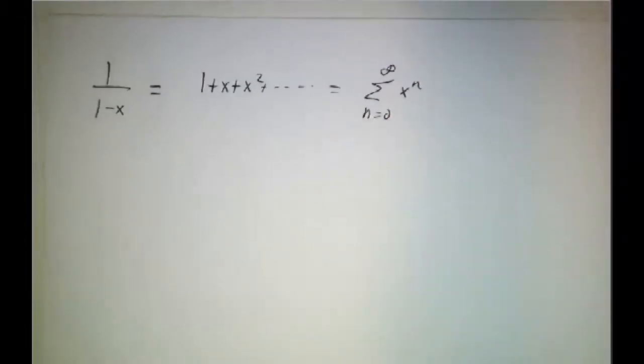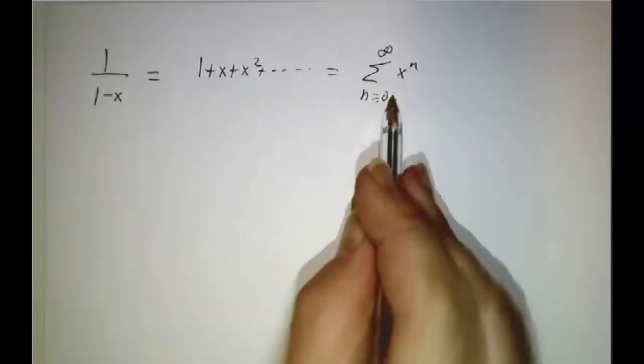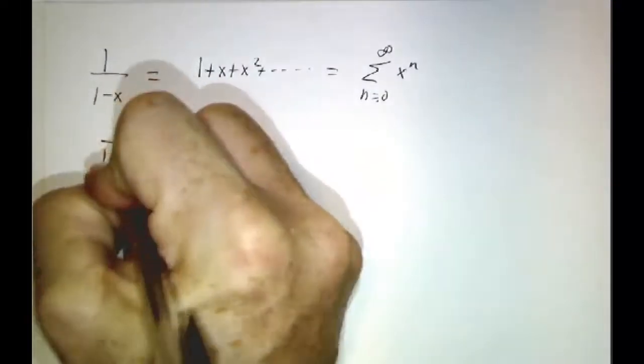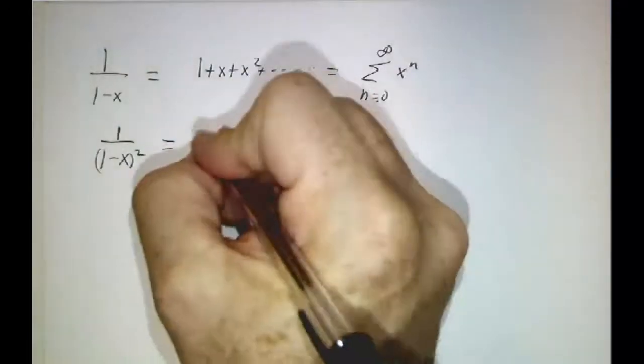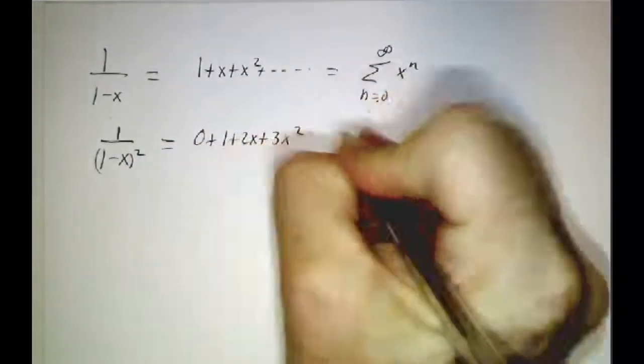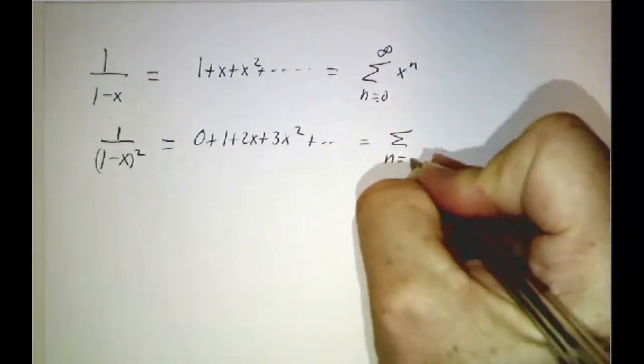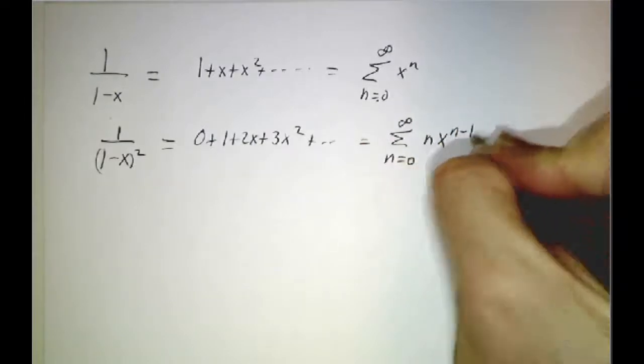So now since this is true for every value of x, you can take the derivative of both sides. If you take the derivative of both sides, you get 1 over 1 minus x squared is equal to 0 plus 1 plus 2x plus 3x squared. In other words, the sum as n goes from 0 to infinity of n times x to the n minus 1.